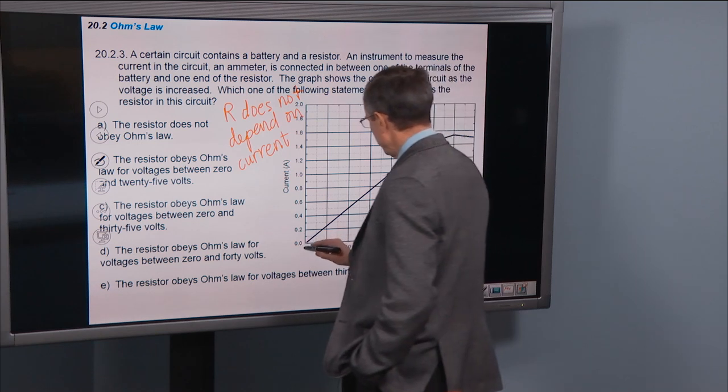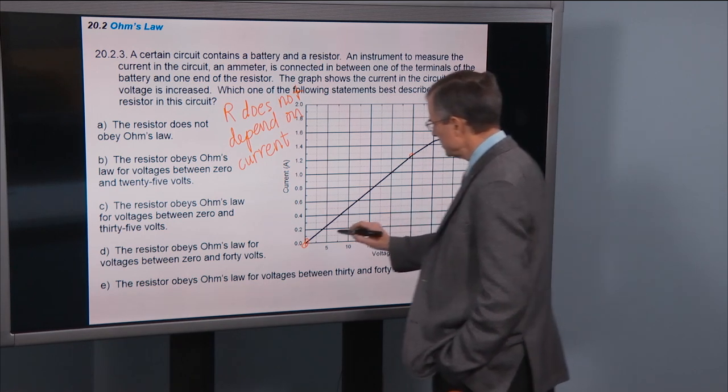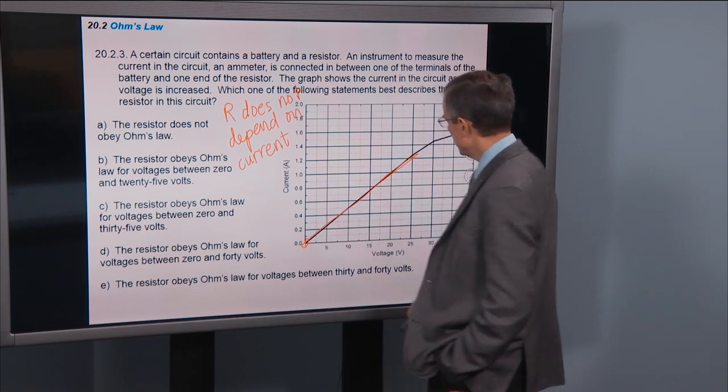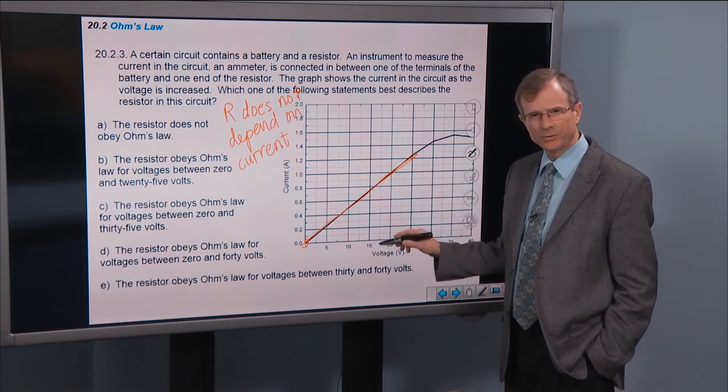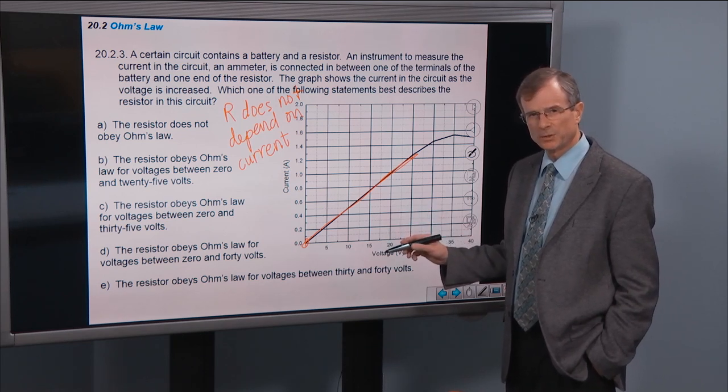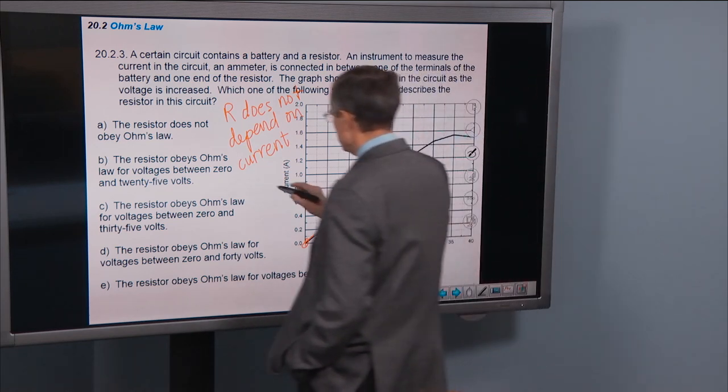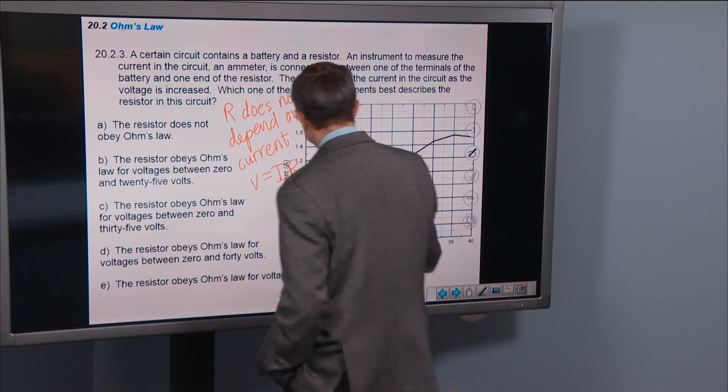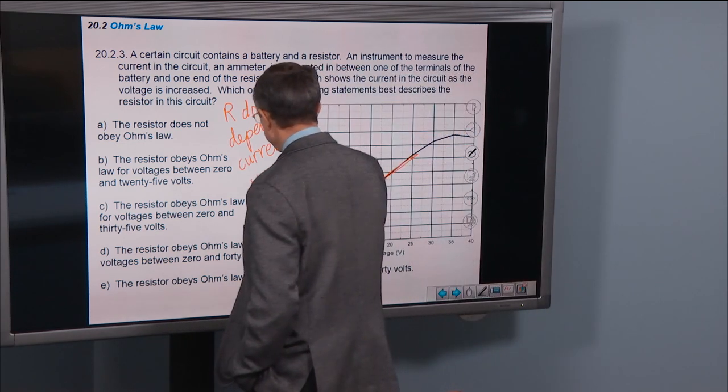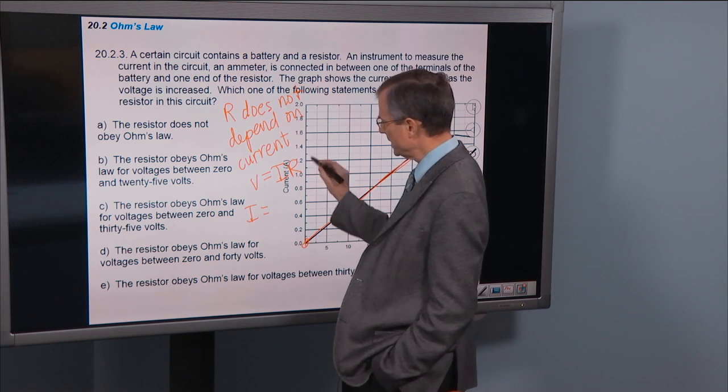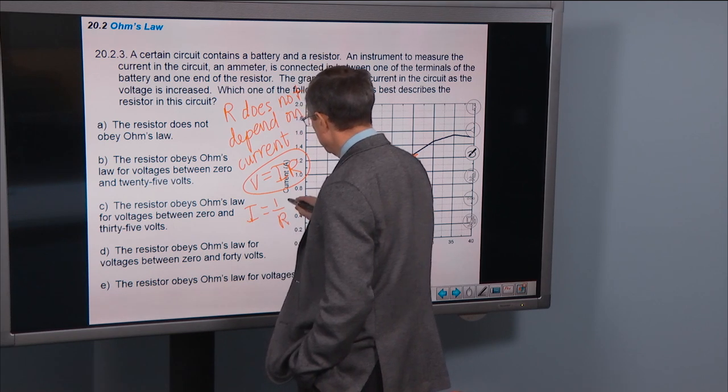Well, from about here to maybe about here, this looks to be pretty much a straight line. That means that the current and the voltage are directly proportional to each other and the slope is related to the resistance. So V equals IR. Here we actually have current plotted as a function of voltage. So if we write this as current, divide both sides of this equation by R, and then we'll get that the current is 1 over R times the voltage.